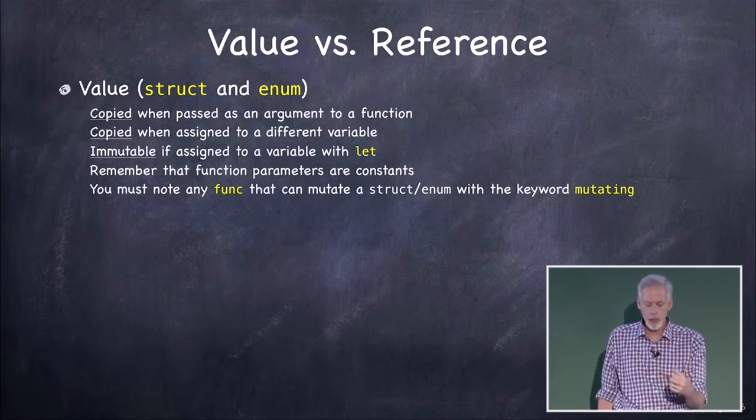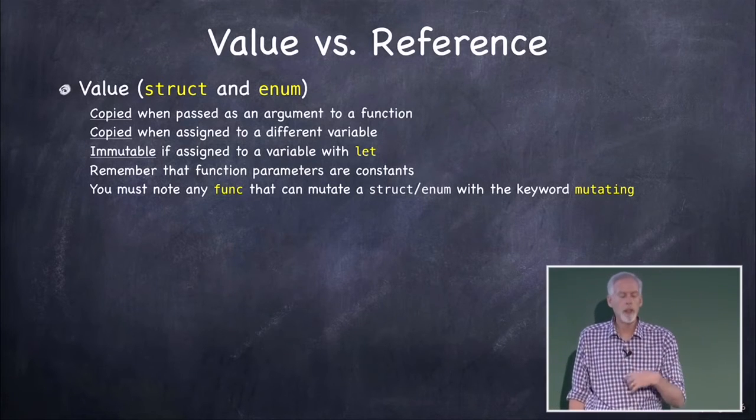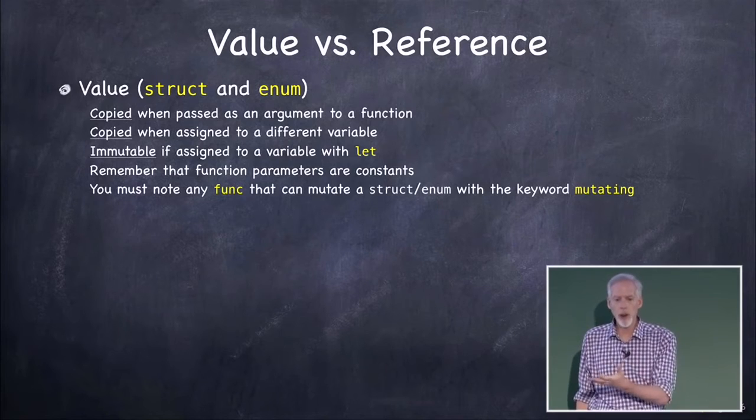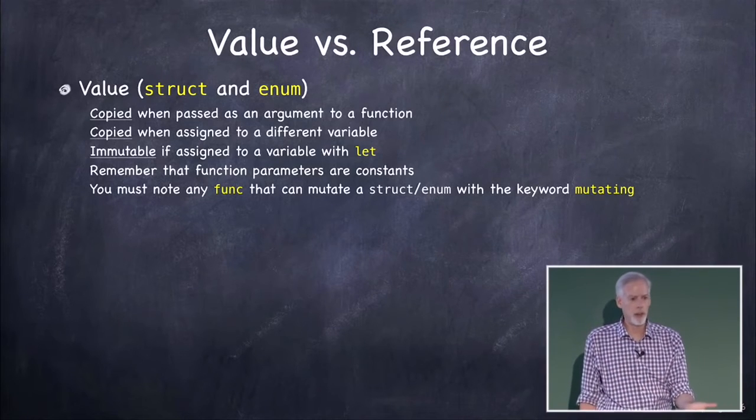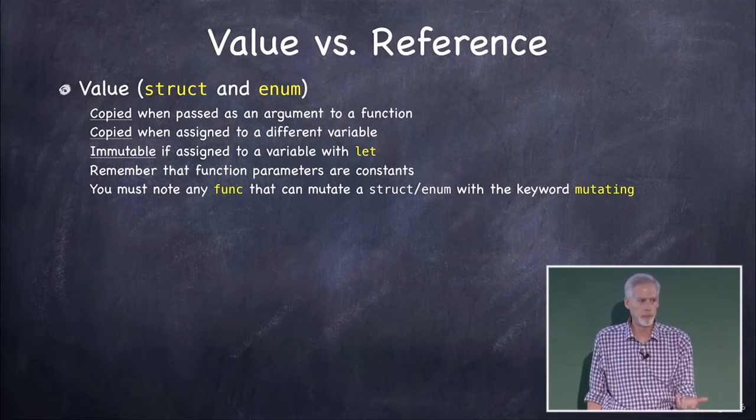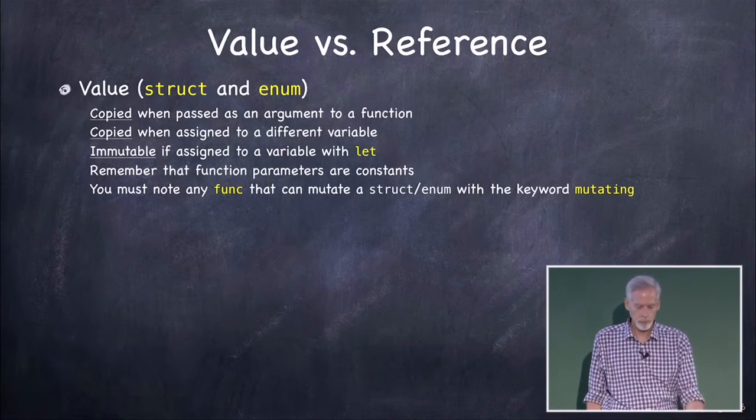A value semantic thing is immutable if it's assigned to a let variable. So if you have an array, since that's value semantic, because an array is a struct, if you assigned it to a let, let x equal an array, you cannot append things onto that array, because it is immutable. Same thing with the dictionary, whatever.